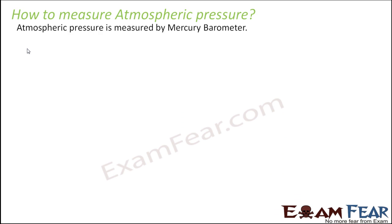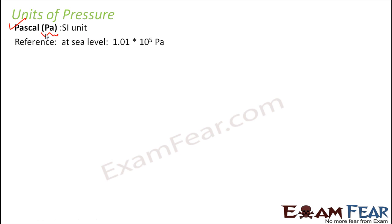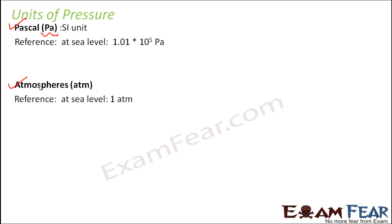Atmospheric pressure is measured by an instrument called a mercury barometer. The SI unit of pressure is pascal, denoted as Pa. Another unit is atmospheres. One atmosphere is defined as the value of atmospheric pressure at sea level, which equals 1.01 × 10⁵ pascals.